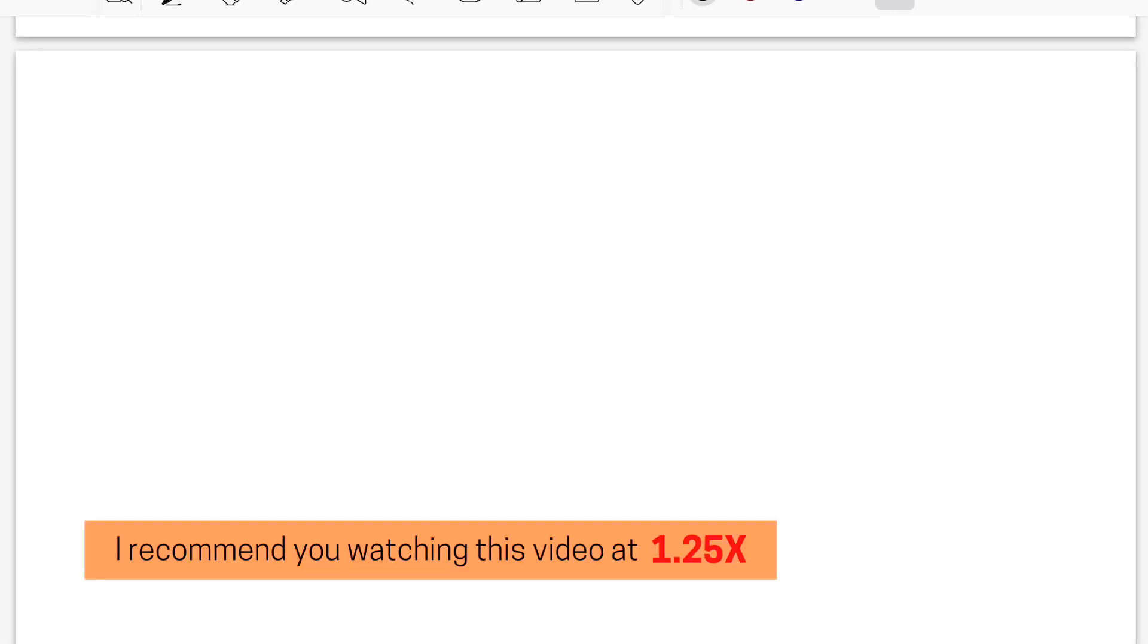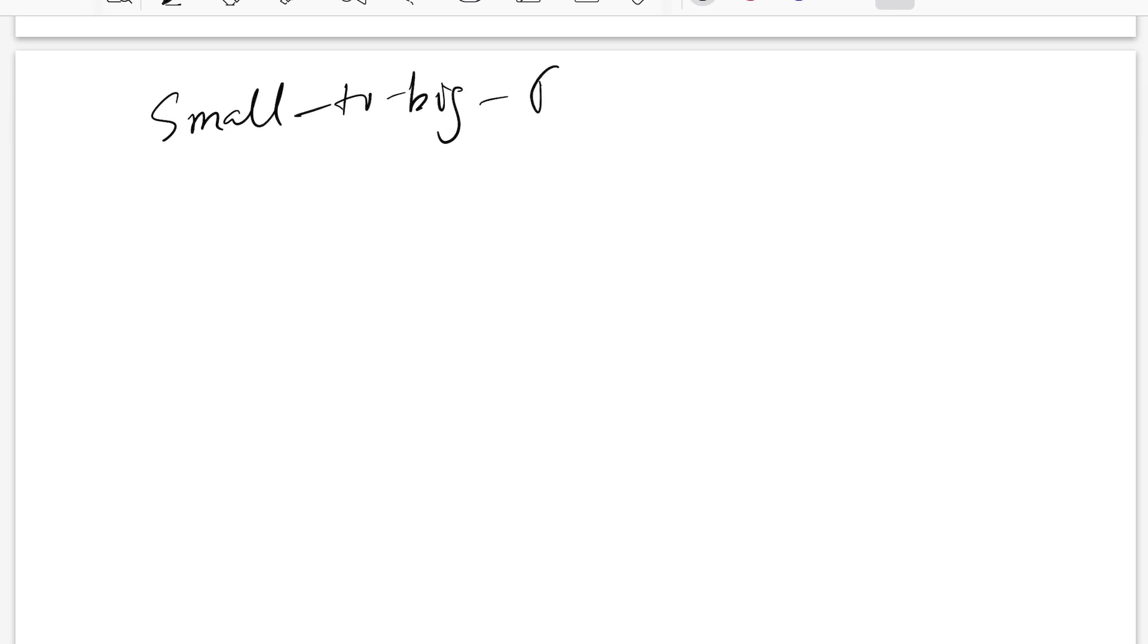Hello there, welcome back to the new video. Today we'll be talking about methods for improving the RAG system. It's known by two names: one is small-to-big retrieval and the other one is parent retrieval.